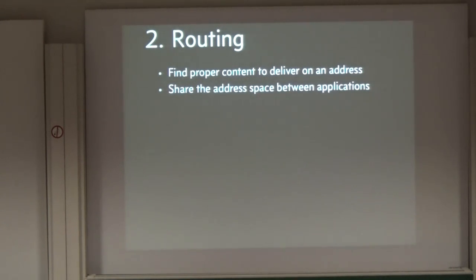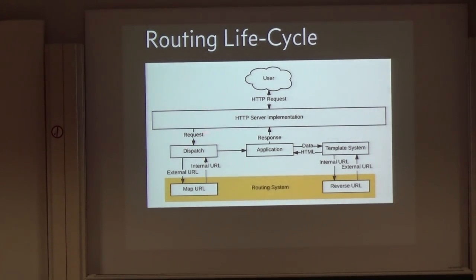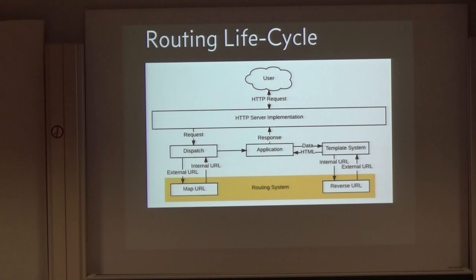The second problem was the URL namespace — how to deliver content on a specific address and share the address space between applications. Usually with a web framework, you have an HTTP server, a user connects, a request comes in, you dispatch based on the URL, call a part of the application, it talks to the template system, forms some HTML, and sends it back. Radiance does this similarly, but upon dispatch, it translates the URL into an internal representation that is standardized and formalized. When you assemble the HTML, you do the inverse. The application itself only deals in internals, whereas the user and HTTP server deal with externals — creating two different worlds.